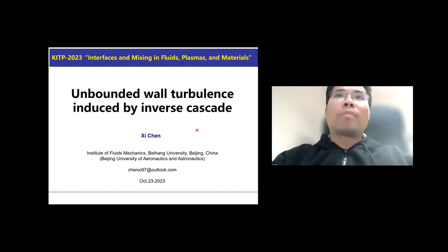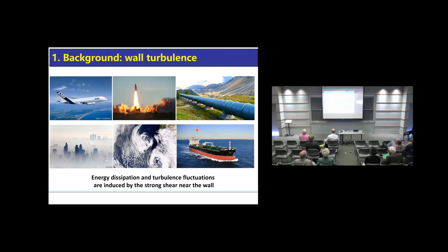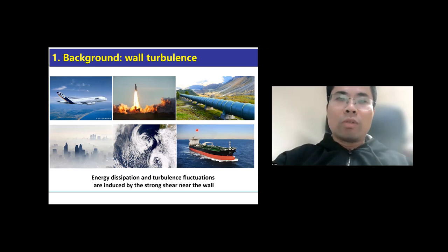Now my talk today is Unbounded Wall Turbulence Induced by Inverse Cascade. Actually, this is about two-dimensional wall flows, but it's inspired from the study on 3D wall flows. By the current work, hopefully I will get some useful information to help answer the questions in 3D wall flows. In reality, we know that wall flows are three-dimensional, and there is indeed an interface, which is a solid wall separating the fluids and the solid walls away from each other. Due to the strong shear at the wall, there are very high energy dissipation and turbulent fluctuations near the wall.